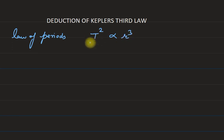T is basically the time period for the planet around the sun, and R is the semi-major axis. So square of time period of planet is proportional to cube of the semi-major axis. We will take the orbit to be circular.